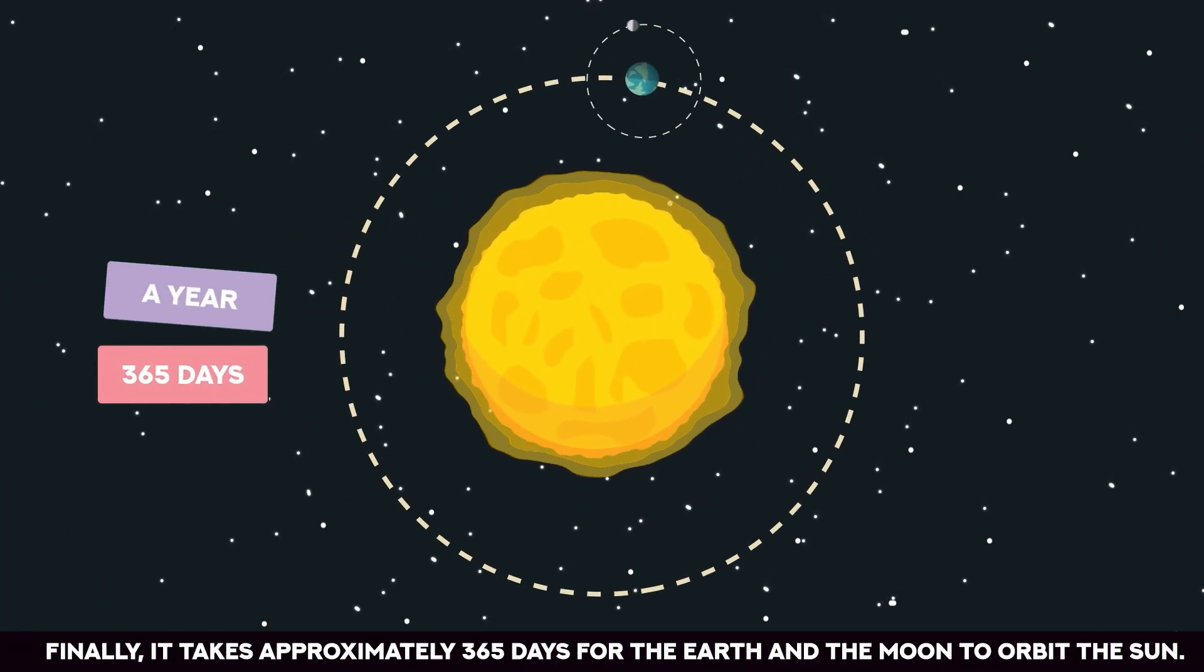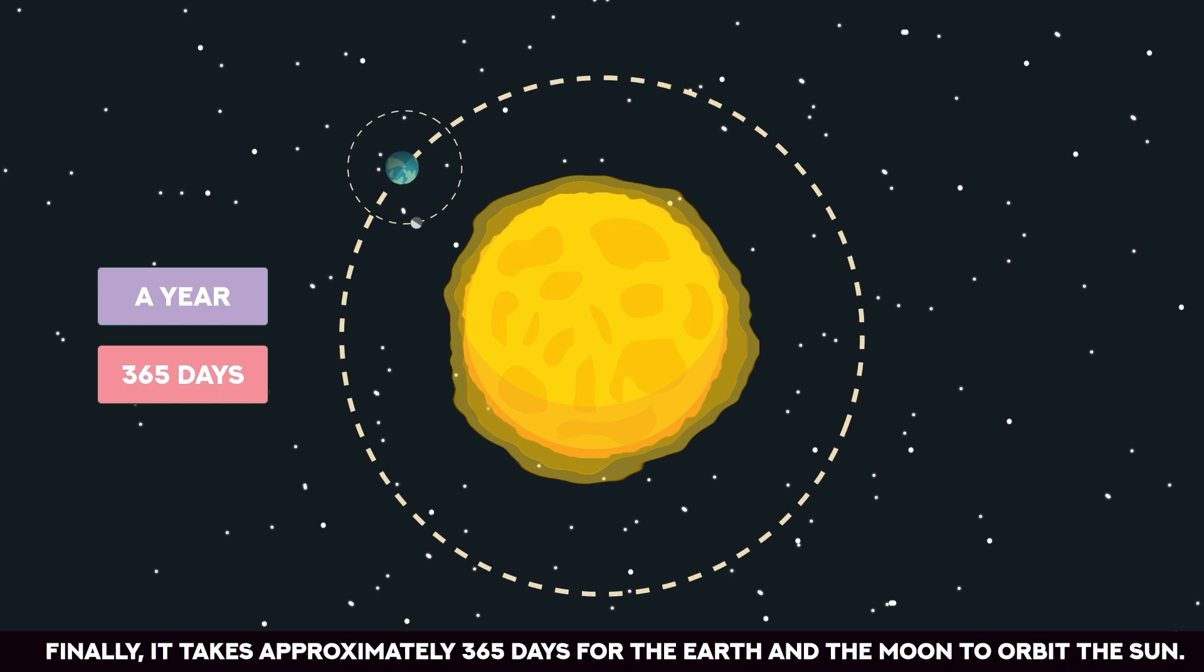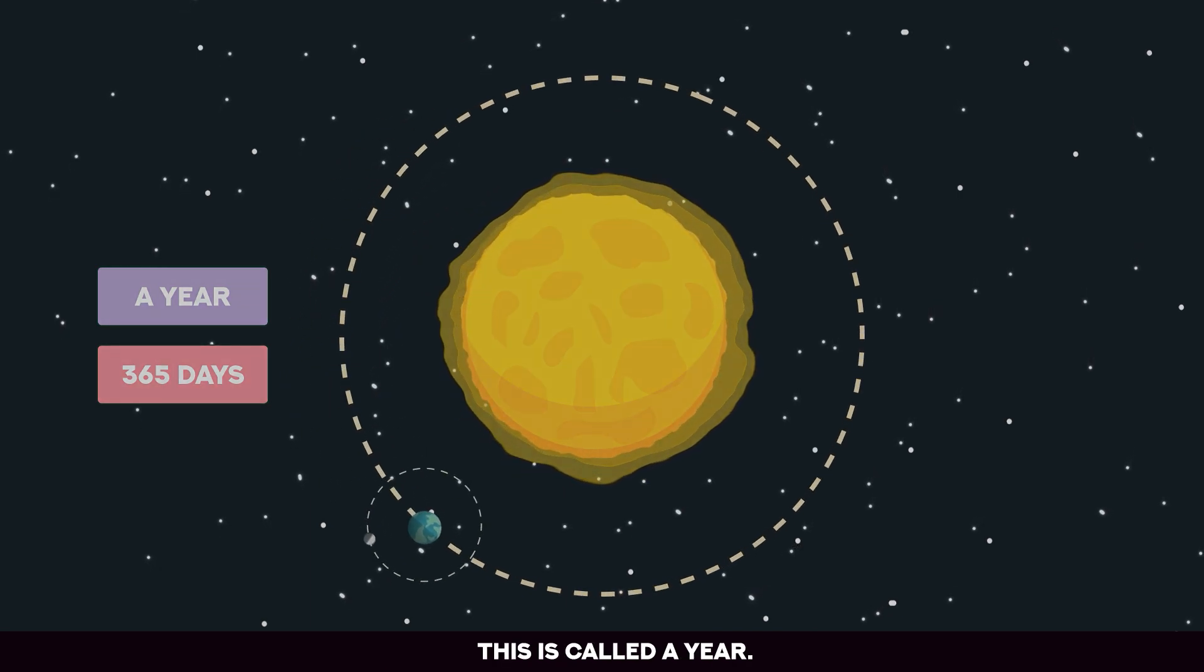Finally, it takes approximately 365 days for the Earth and the Moon to orbit the Sun. This is called a year.